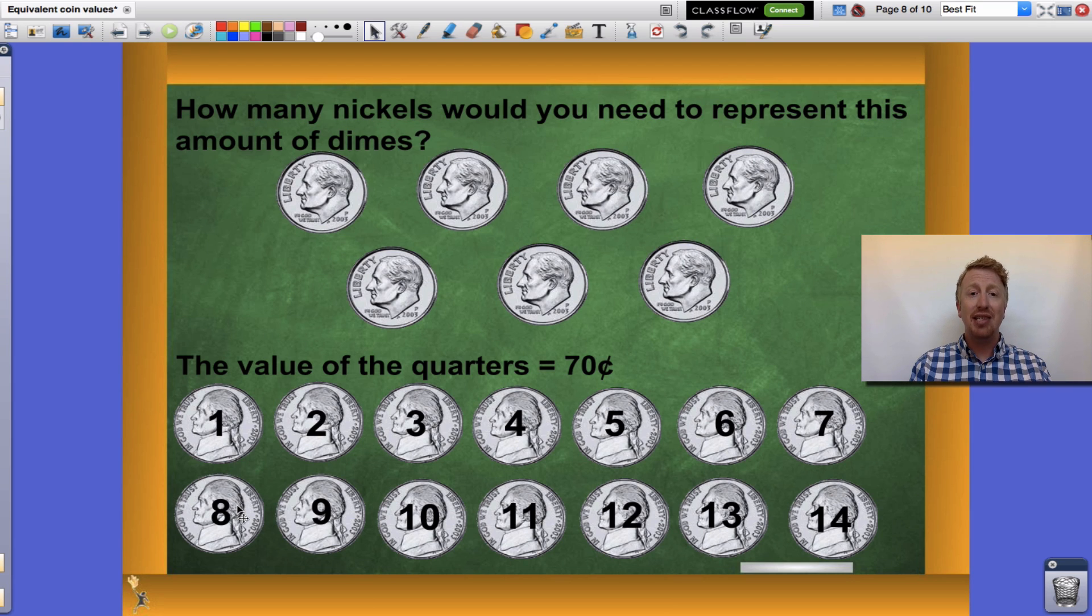Five cents, ten cents, fifteen, twenty, twenty-five, thirty, thirty-five, forty, forty-five, fifty, fifty-five, sixty, sixty-five, and seventy. Seven dimes is equivalent to or equal to fourteen nickels.